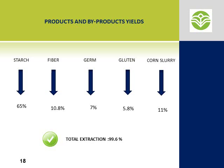Products and by-products yields. The screen shows starch, gluten, germ, and corn steep liquor yields. As you can see, the total extraction rate could be around 99%, which is quite a high rate, and this is a big advantage of the corn starch line in comparison to the wheat starch line.